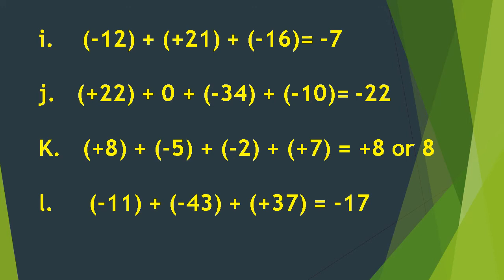Letter J: positive 22 plus 0 plus negative 34 plus negative 10 is equal to negative 22. Negative 34 and negative 10 have the same sign, so we add them to get negative 44. Then negative 44 plus positive 22 gives the answer negative 22.